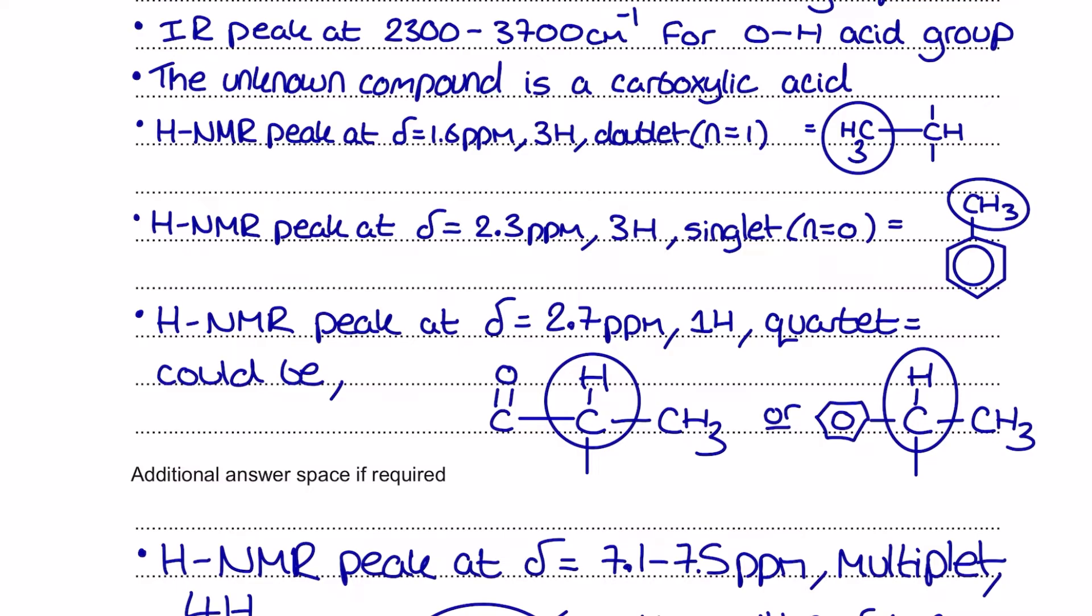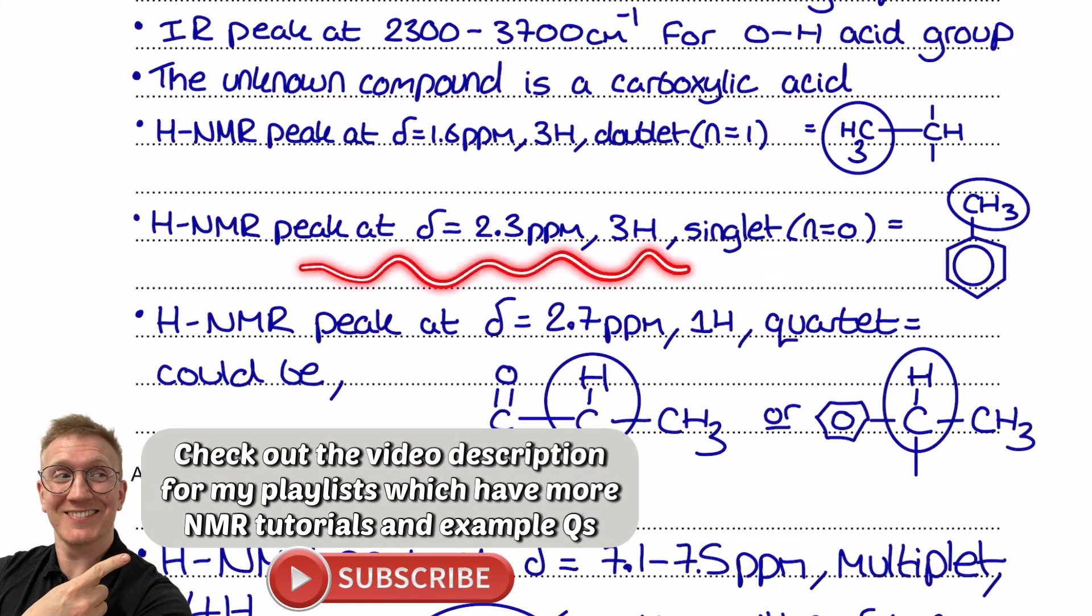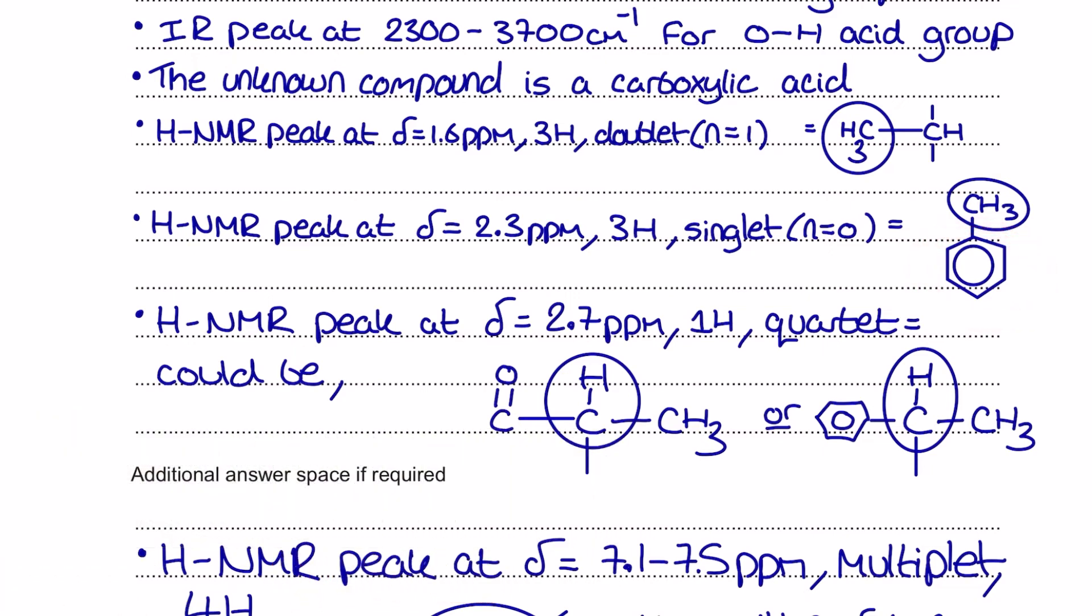Next up I've got the peak at 2.3 ppm, three hydrogens. It's a singlet which means it's all by itself and the position of it and the knowledge that I've got an aromatic ring tells me this is a CH3 on the ring. Don't worry about the fact I've not shown another group on the ring here. We are doing pieces of the molecule bit by bit and there's no information in this peak analysis that tells me there's anything else on the ring. That's my other knowledge from looking at the question.